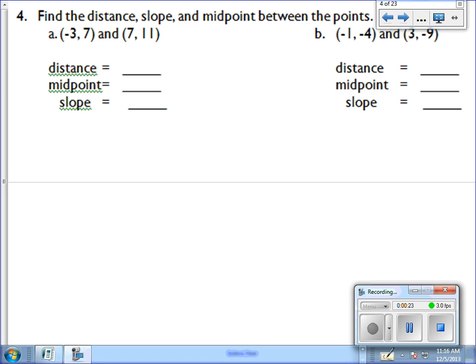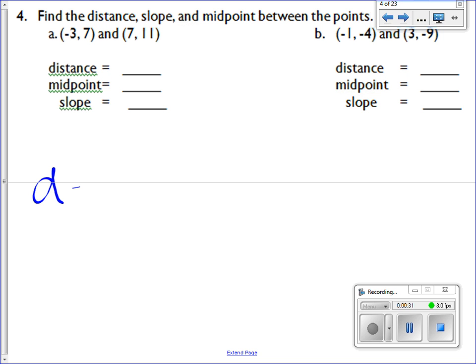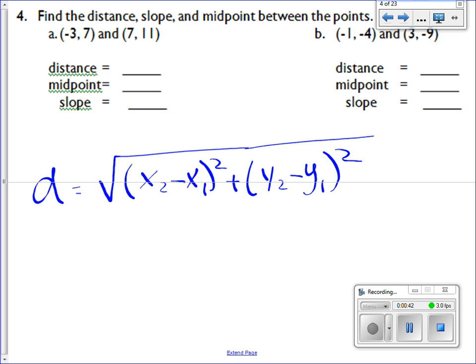So find the distance and use the distance formula. The distance formula is d equals the square root: you subtract the two x values and square them, you subtract the two y values and square them.